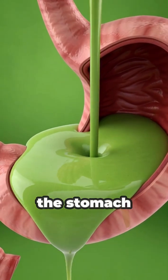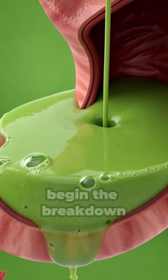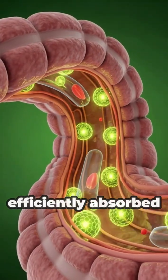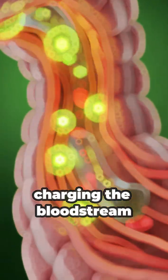First, it enters the stomach, where powerful enzymes begin the breakdown process. Next, the critical nutrients and vitamins are efficiently absorbed, charging the bloodstream.